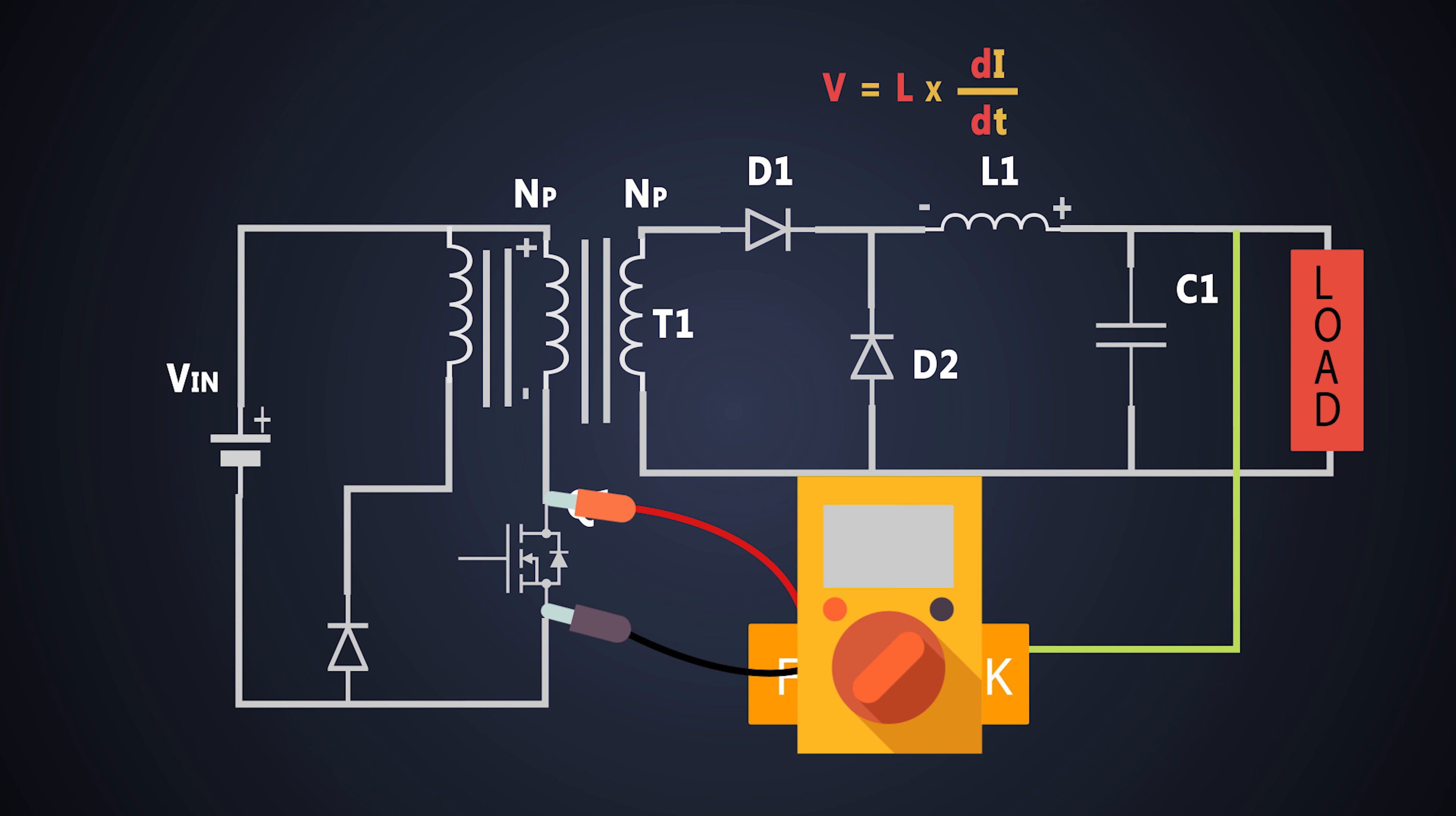The voltage across the MOSFET goes up to twice of input voltage, or it may go beyond that as well, so we cannot go for higher power applications with this configuration. Apart from this, there are many methods to reset the transformer.